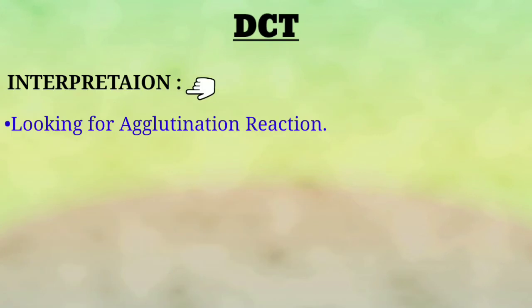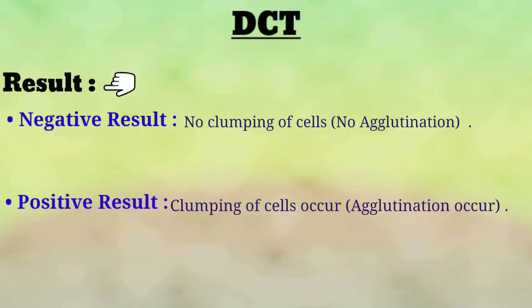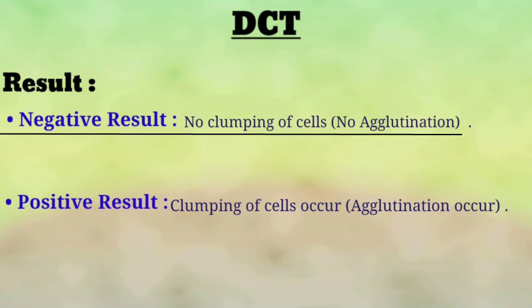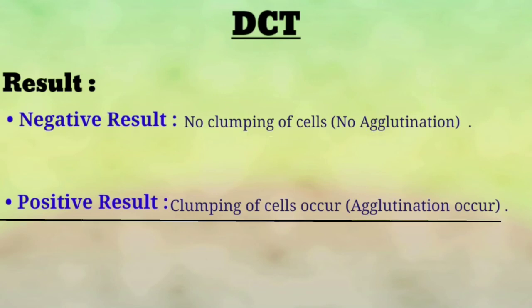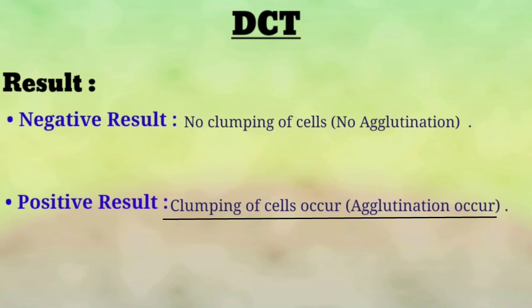Interpretation: we look for agglutination reactions. Result: it can be in the form of a negative result or a positive result. Negative result means no clumping of cells — no agglutination. Positive result means clumping of cells occurs — agglutination occurs. In direct Coombs test, negative means no agglutination is seen, and positive means agglutination is observed.